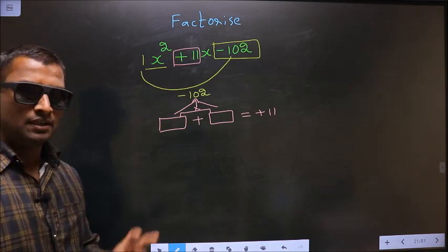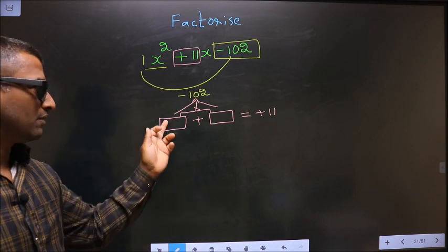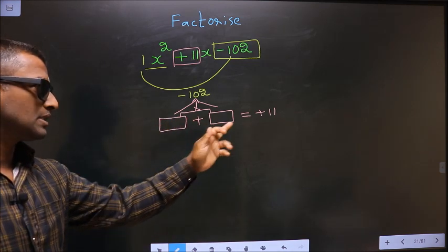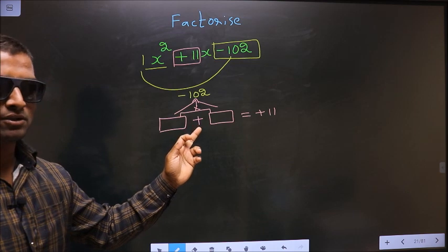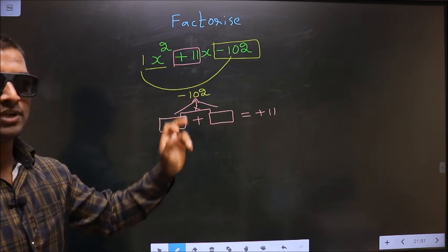I repeat: look out for two numbers such that when you add the two numbers you should get 11, and also when you multiply you should get minus 102.